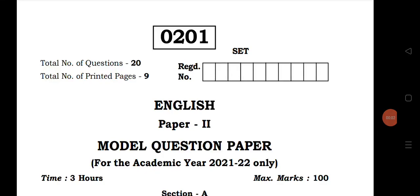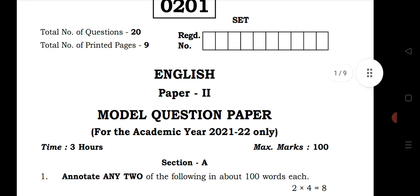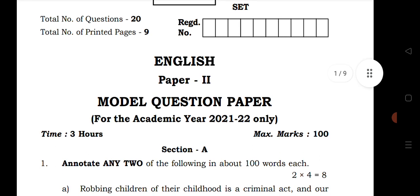Welcome to STA Academy. Today we are going to discuss the inter second year English paper for all streams of intermediate: MPC, BPC, CEC, HEC, and MHLC. This is a very important video. In this video I will tell you which chapters you have to read. After seeing this model paper you will know which chapters are deleted and which are not. Before we start, if you are new please subscribe to our channel.